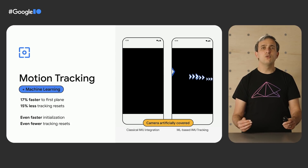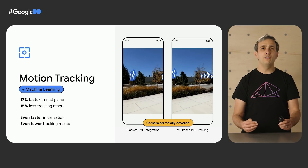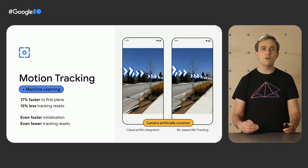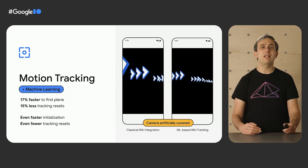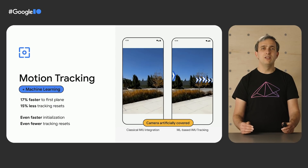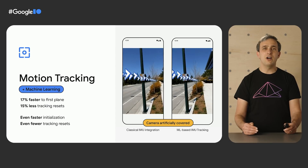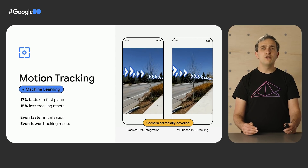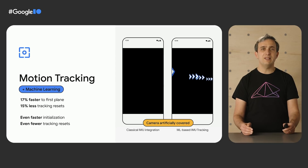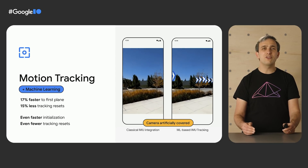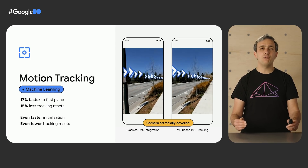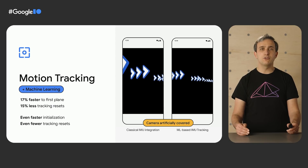Late last year, we started an experiment where we use ML to drive motion tracking in cases where the camera image is not enough, forced here by turning the screen black. This experiment resulted in faster initialization and a further reduction in the amount of times motion tracking gets lost. You can see in the video how motion tracking is able to continue appropriately even when the screen goes black. We are currently rolling out these ML-driven improvements to all users of LiveView in Google Maps.